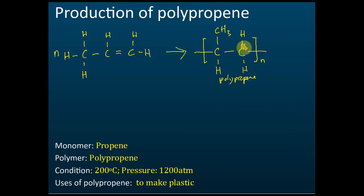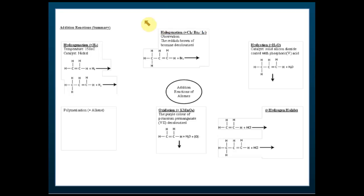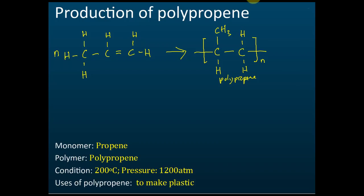In conclusion, you can put the CH3 here, or here, or here — it doesn't matter, but most books draw it in one position. If they ask you to draw the monomer of polypropene, just draw propene — the structural formula of propene is the monomer.